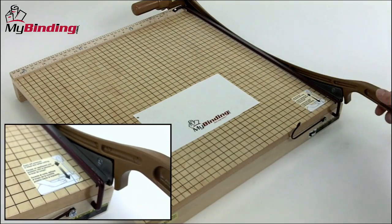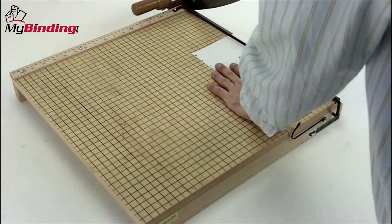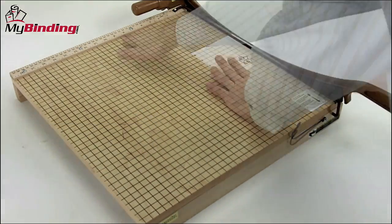Simply flip over the safety latch and you're ready to go. Line your papers on the US and metric grid and make your slice.